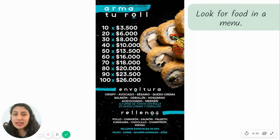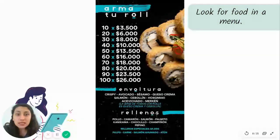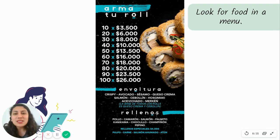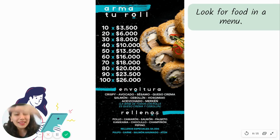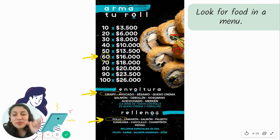We also do scanning when we look for food in a menu. Let's suppose you want to eat sushi — 60 pieces of chicken crispy sushi. You're going to look for it very quickly in the menu. You're not going to read carefully all of it; you look for what you need. There it is: 60 crispy pollo.